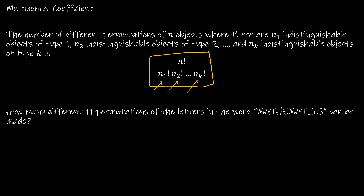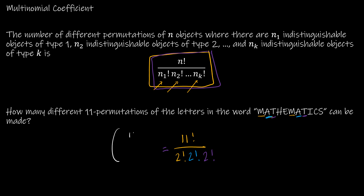So for 'mathematics,' I would write 11 factorial over 2 factorial for the M's, times 2 factorial for the A's, times 2 factorial for the T's, and the rest are all singletons. That's exactly what we just derived, but obviously this is a lot faster. Another way this might be written is as (11; 2, 2, 2), where the numbers in the bottom represent the count of identical items.